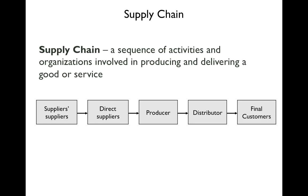Here's the supply chain. It's the sequence of activities and organizations that produce or deliver goods or services. You start on the left with suppliers — those are the people your direct suppliers get materials from. Then you have direct suppliers, then the producer — you are the producer making something. That product or service has to be distributed through a distributor, and then it reaches the final customers. We'll be covering this a lot throughout the class.